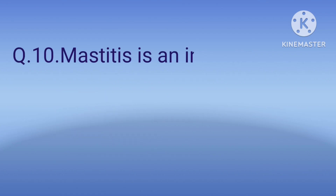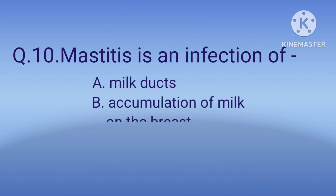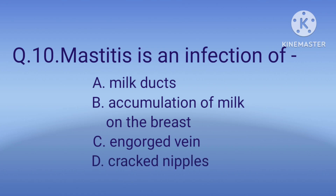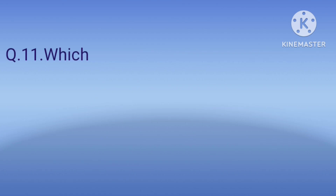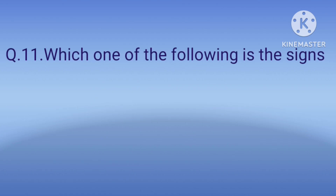Question 10: Mastitis is an infection of — option A: milk ducts, option B: accumulation of milk in the breast, option C: engorged vein, option D: cracked nipples. The correct option is A, milk ducts. Mastitis is an infection of the milk ducts.